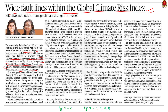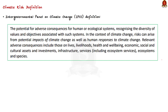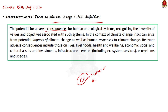Before understanding the flaws in calculating climate risk, let us see what climate risk is. The Intergovernmental Panel on Climate Change defines climate risk as the potential for adverse consequences — the likelihood of unfavorable impacts occurring as a result of severe climate events interacting with vulnerable environmental, social, economic, political, or cultural conditions. In simple words, climate risk is the product of the probability of a climate event occurring and its adverse consequences.